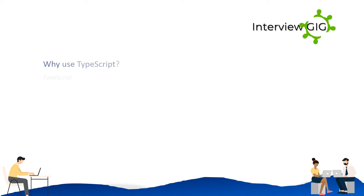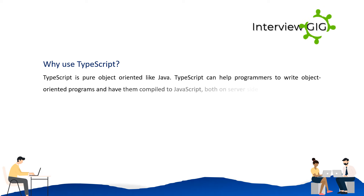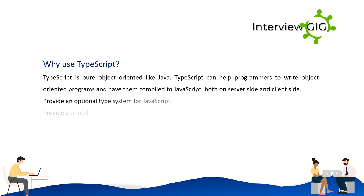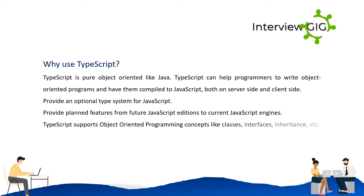Why use TypeScript? TypeScript is pure object-oriented like Java. TypeScript can help programmers write object-oriented programs and have them compiled to JavaScript, both on server-side and client-side. It provides an optional type system for JavaScript and planned features from future JavaScript additions to current JavaScript engines. TypeScript supports OOP concepts like classes, interfaces, inheritance, etc.